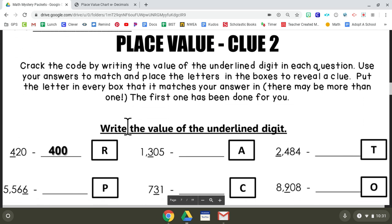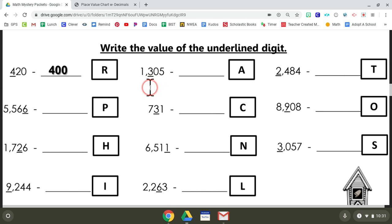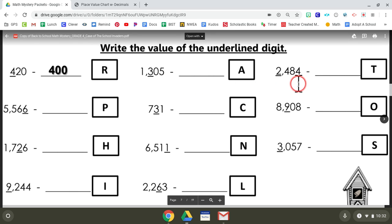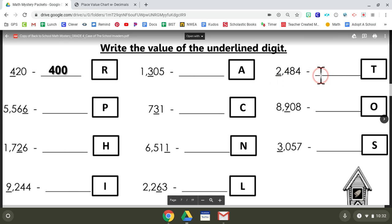Moving to Tuesday, Place Value. Crack the code by writing the value of the underlined digit in each question. If we were to look here, we have ones, tens, hundreds. That is a four and it's in the hundred spot, so it's four hundred. Three hundred—the underlined value is in the ones, tens, hundreds. It's a three and it's in the hundred spot, so the value is three hundred. We'll do one more: ones, tens, hundreds, thousands. It's a two, it's in the thousand spot, so the answer is two thousand.